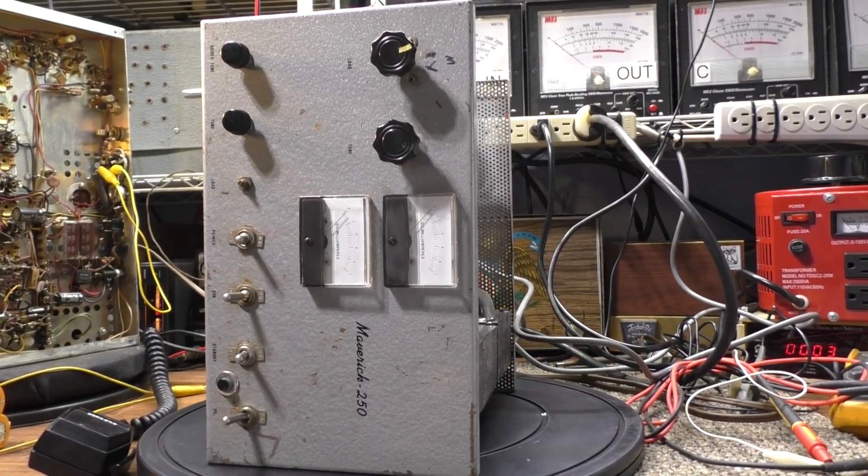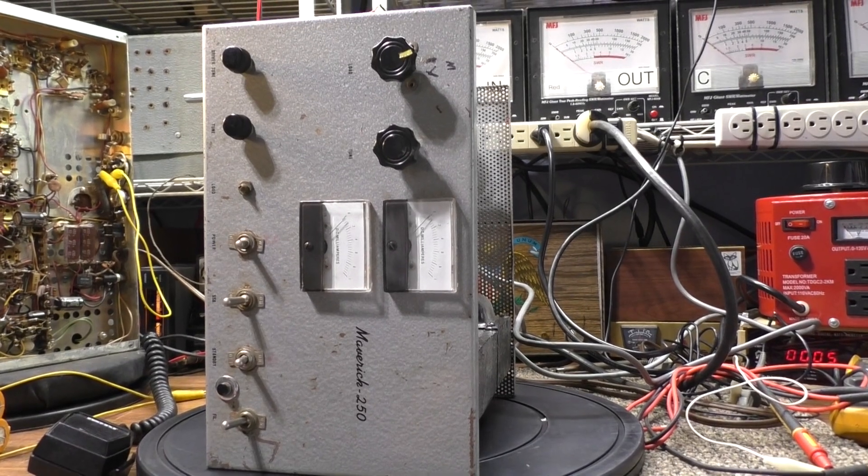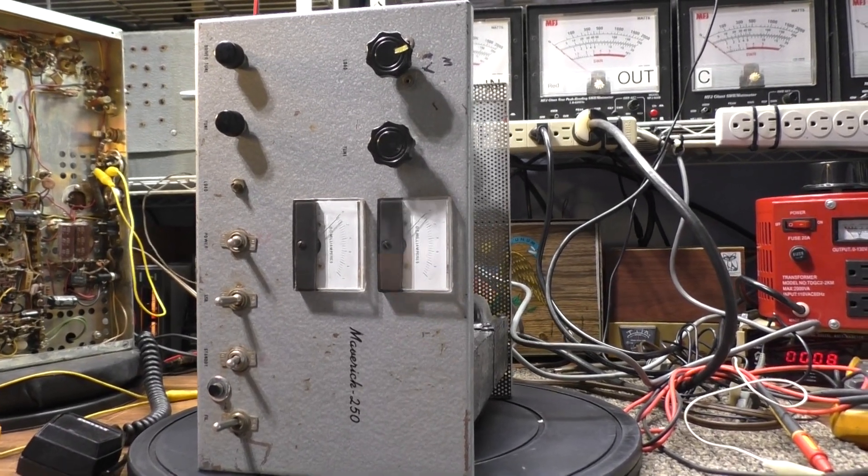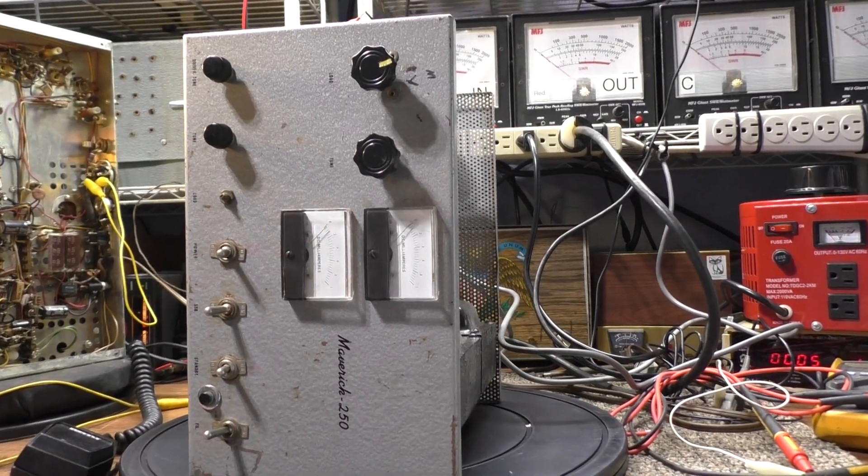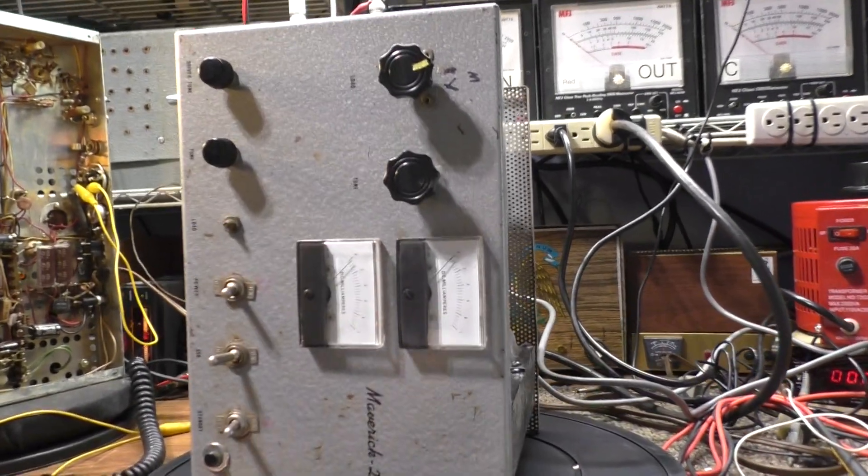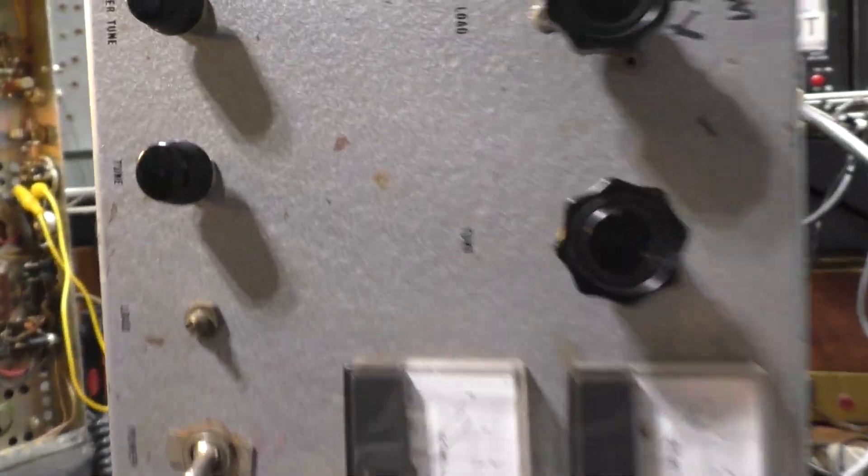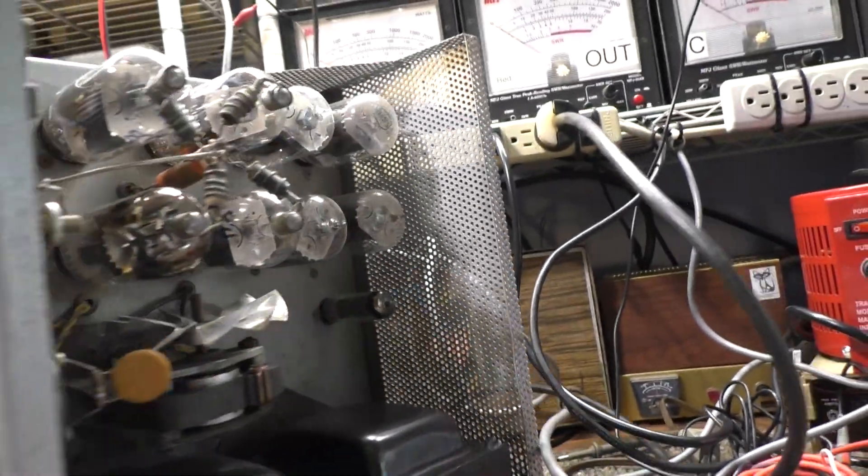Anyway, Maverick 250 grounded grid sweep tube box. We know these backwards, forward, sideways, so we went ahead and knocked this easy one out. Just a repair, didn't do a total rebuild and all that jazz for it.